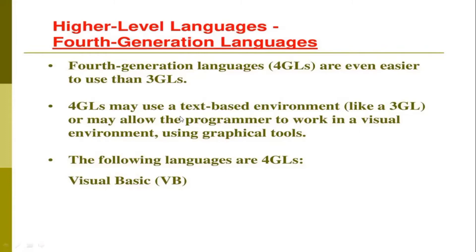A language that comes under the span of fourth generation high-level languages is Visual Basic. Visual Basic already has buttons and screens in it — you just drag and drop the button to your desired position. That button's code is already defined, and it will be added at the back end of that graphical representation, which will then be added to your source code.